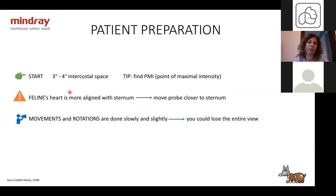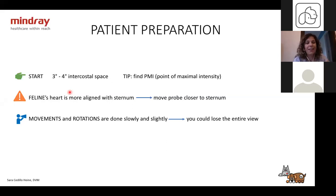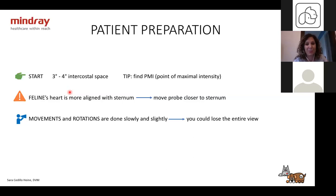To start, position between the third and fourth intercostal space. My tip is to put your hand there and find the point of maximal intensity — that's where you place the probe. For feline hearts, remember they're more aligned with the sternum, so you may need to move the probe closer to the sternum. If you're transitioning from abdominal ultrasound, remember that movements and rotations are done slowly and slightly — the heart moves a lot, so every little rotation done too fast can lose the entire view.